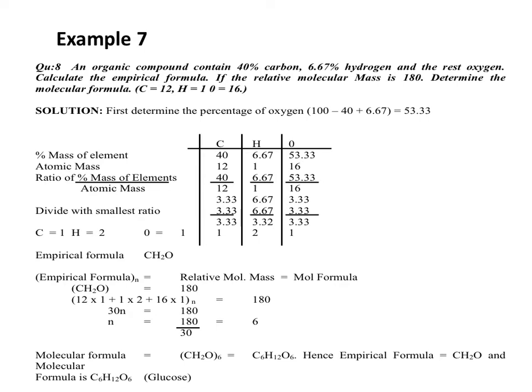Dividing by the smallest ratio, we have 3.33 over 3.33 equals 1 for carbon. 6.67 over 3.33 equals approximately 2 for hydrogen. And 3.33 over 3.33 equals 1 for oxygen. So carbon is 1, hydrogen is 2, and oxygen is 1. Therefore the empirical formula is CH2O.